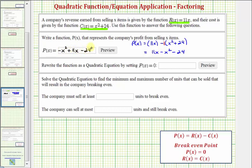And now for the next part, we're asked to rewrite the function as a quadratic equation by setting P(x) equal to zero. Remember, P(x) is our profit function, so when we set P(x) equal to zero, we're forming an equation where if we solve that equation, we can determine the break even points, which will tell us how many items we would have to sell in order to make zero profit or break even.